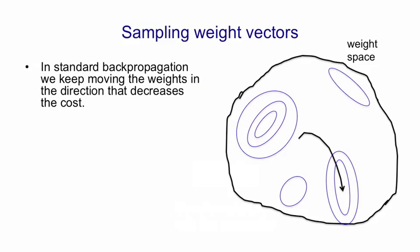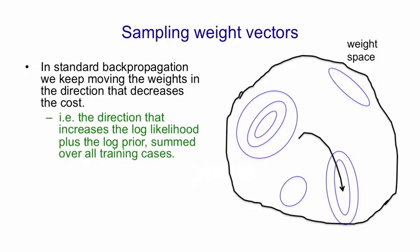In this weight space, I've drawn some contours, which are meant to be contours of equal values of our cost function. And the way backpropagation is normally used is we start with some small value of the weights and then we follow the gradient. We move downhill in our cost function in the direction that increases the log likelihood plus the log prior summed over all training cases.